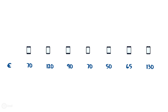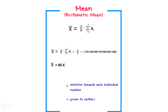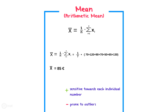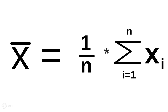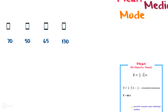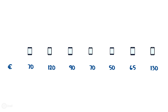Let's start with the mean, also known as average or arithmetic mean. The formula for calculating the mean is x̄ equals one divided by n times the summation of xi. Let's take a look at the set of prices again. The merchant offers seven different smartphones with seven different prices, which means that n, the number of observations, has to be seven.